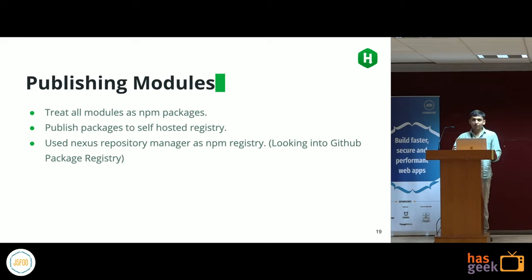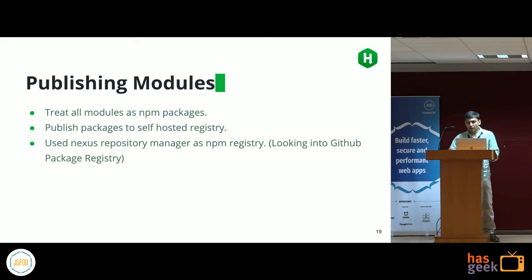With Nexus Repository Manager, we just create two tokens — a read token and a write token. Each module gets a read token, and write tokens are kept on Travis so developers can't push directly; releases always happen through Travis. We're currently exploring GitHub Package Registry since we already manage credentials on GitHub.